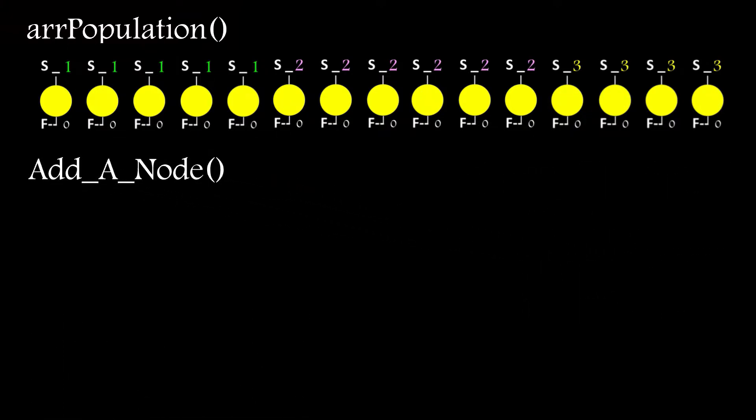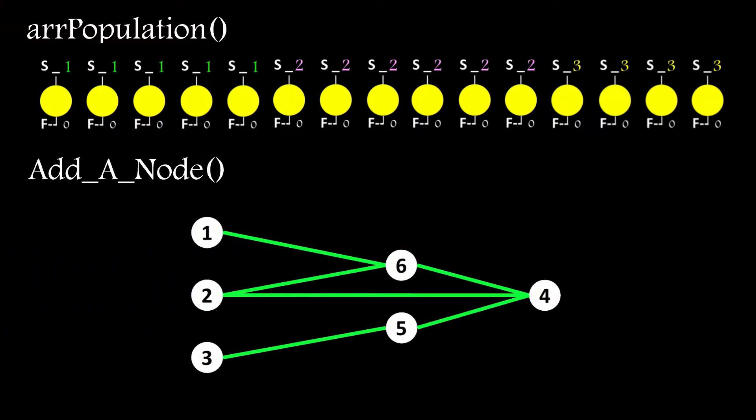Adding a node is where it gets interesting. An enabled forward connection is selected at random as the place for the new node, and then it's disabled. Two new connections are then placed in the connection array, and one new node placed in the node array. Here the new node is node 7, and the 1.7 connection weight is set to the same value as the disabled connection, and the 7.6 connection weight is set randomly.